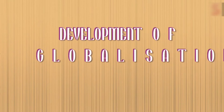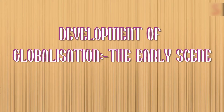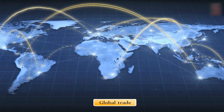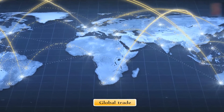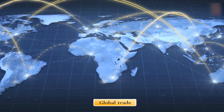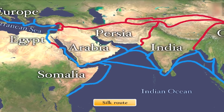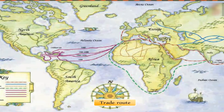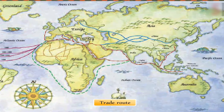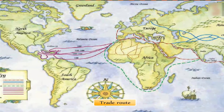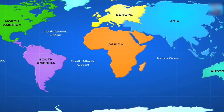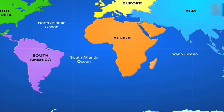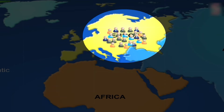In today's world, all the major countries have trade relations with one another. Since early history, global trade has been connecting various countries in different ways. The Silk Route in ancient times helped in connecting Asia with the rest of the world. This trade route not only facilitated movement of goods but also movement of people and ideas.